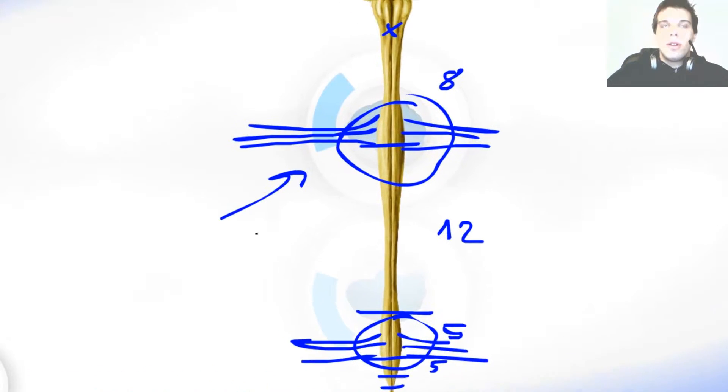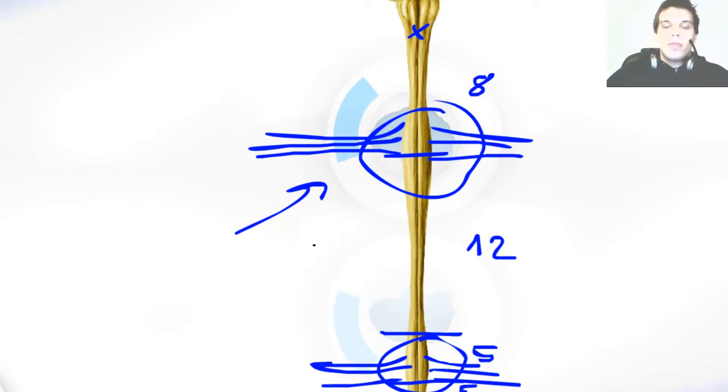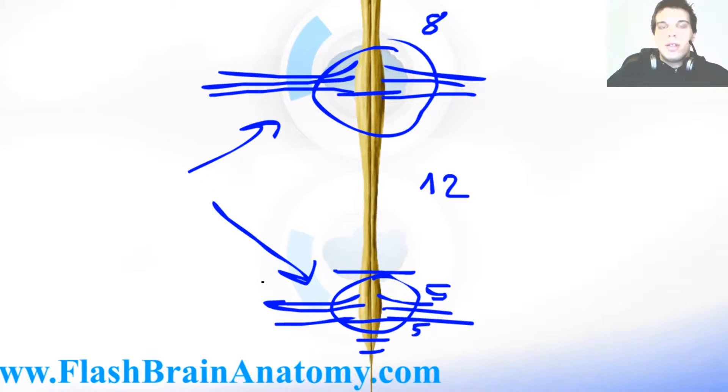Over here at the cervical part they leave for the upper extremities, for the upper limbs. Down there at the lumbar part they leave for the lower extremities, the lower limbs.